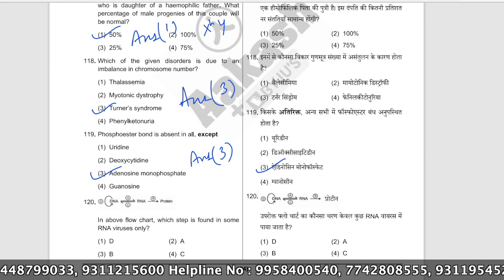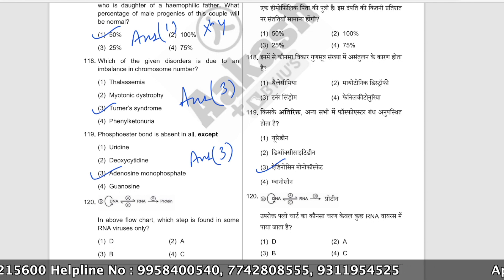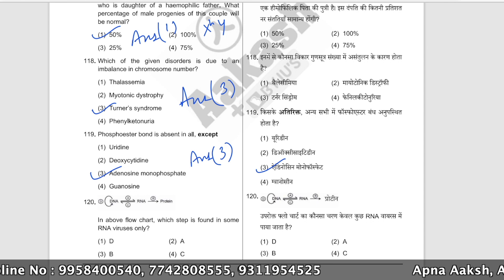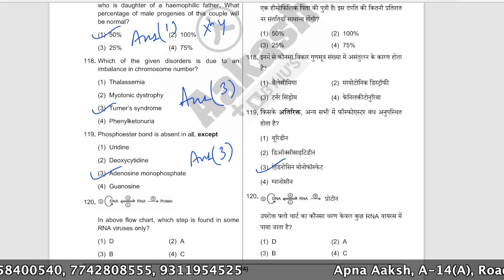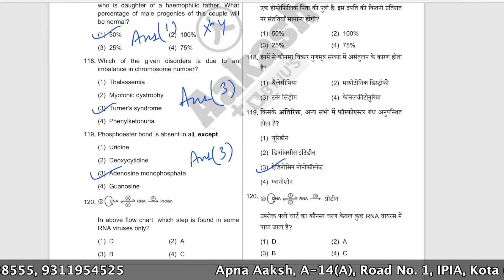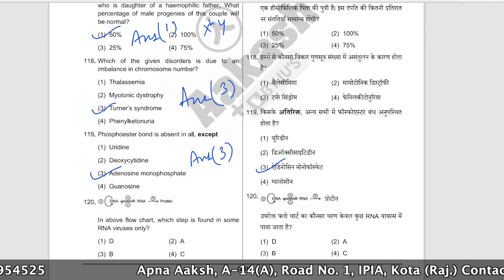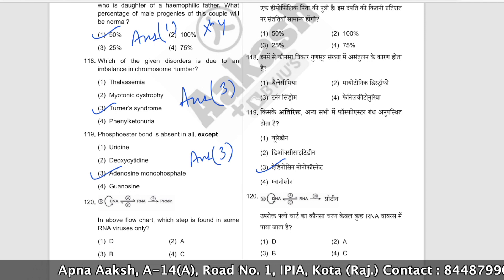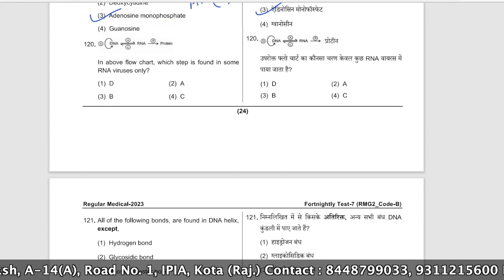In the given flowchart of DNA replication and transcription processes, which step is found in some RNA viruses only? Reverse transcription — where RNA is used as template to make DNA — is found only in some RNA viruses (retroviruses).